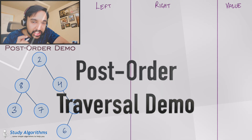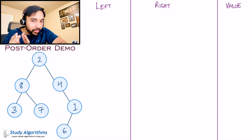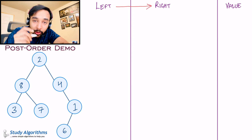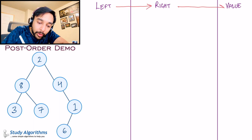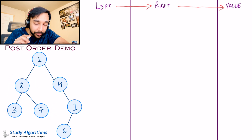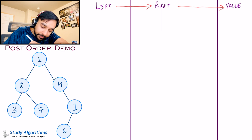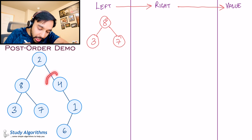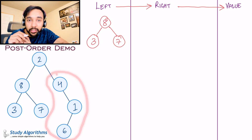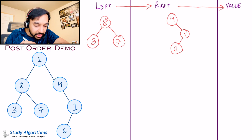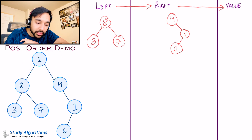Let us take up our sample tree and apply post-order traversal on the complete tree. You know you have to go to the left child first, then the right child, and then ultimately the value. In this tree, on the left you have an entire subtree, so I will write down this entire tree in my left column. On the right I have another complete tree, so I will write it in the right column. And for the value, we just have a single node, so we copy that value into the value column.